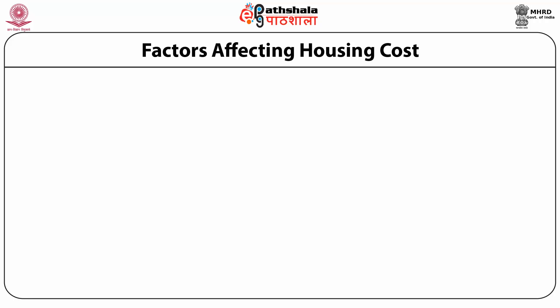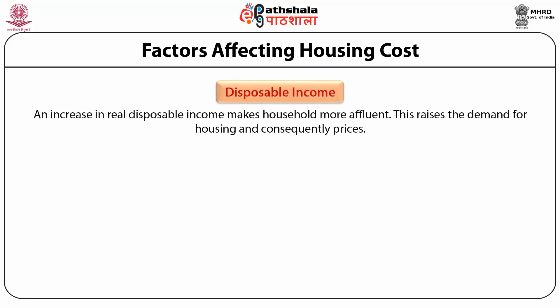Apart from demand and supply forces, several other related factors influence the demand and supply of housing leading to variations in housing cost. Number one is disposable income: an increase in real disposable incomes makes households more affluent, which raises the demand for housing and consequently prices.